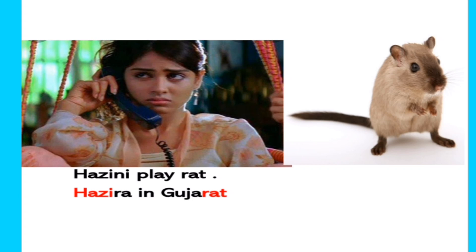The next mnemonic is from the Tamil movie Santosh Bramanyam, where the heroine Hasini is very active like a rat. Hasini plays like a rat — that is Hazira, which is located in Gujarat. If you relate it with that movie, you can remember that point easily.